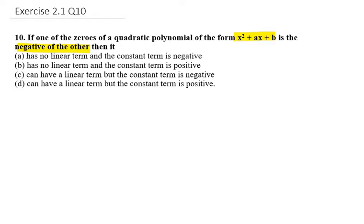These are the options given to us. Out of these four we need to find the answer. In this case it says that one of the zeros, beta, equals negative of the other, that is minus alpha. So this is given to us.